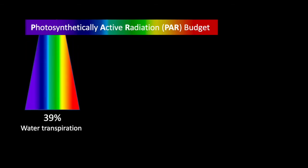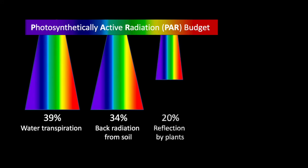39% is just for water transpiration, 34% is back-radiated from the soil, and 20% is reflected by plants.